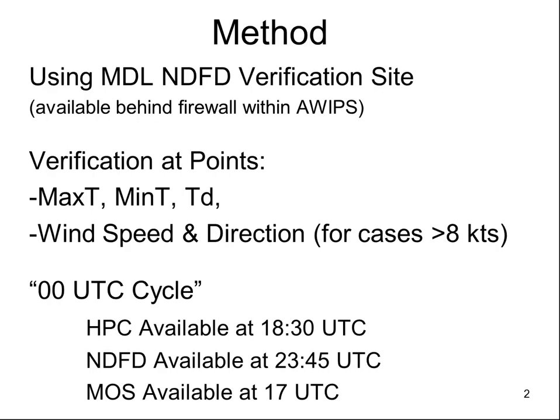Here's the method. Using MDL verification, the NDFD verification site — it's no longer accessible outside AWIPS, but you can see this on your AWIPS. Verification is at points for MAX-T, MIN-T, dew point, wind speed and direction. They looked at cases for greater than eight knots, which is what's typically on the NDFD site. They only used the 0Z cycle because that's what HPC produces. Available at 1830Z for HPC, NDFD at 2345Z, and MOS at 17Z.